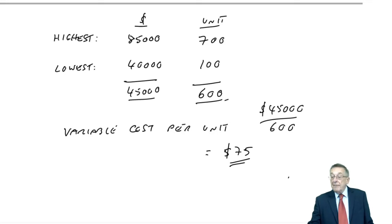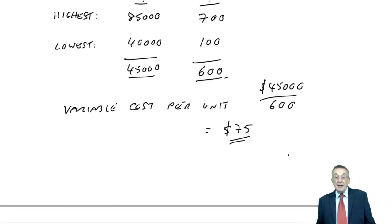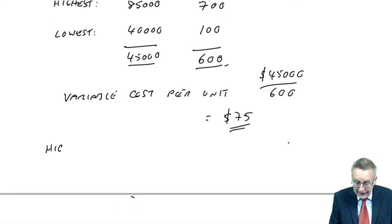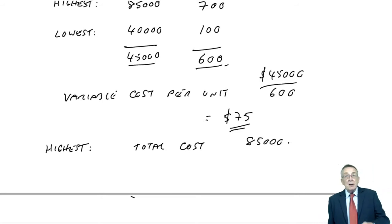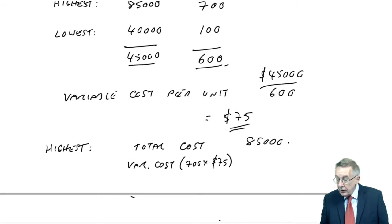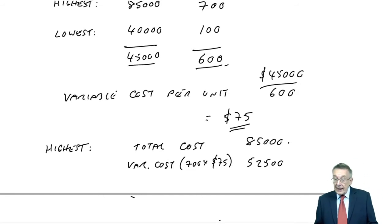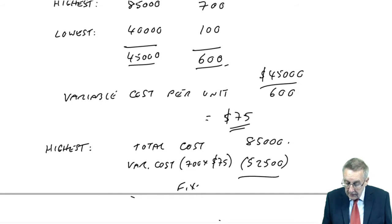And having got the variable cost, now we can easily work out what the fixed cost per month is. If we look back at the highest one, we know what the total cost was, $85,000. That total cost is the total of the fixed cost plus the total variable cost. Well, the variable cost, if I'm looking at the highest, we've done 700 units. Well, at $75 each, the total variable cost that month would have been $52,500, and therefore the rest of that total of 85 must be the fixed cost per month. And what's it come to? $32,500.